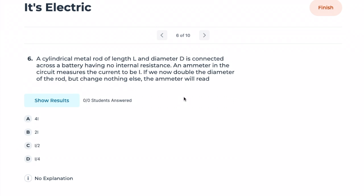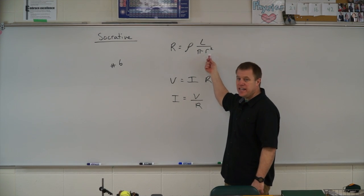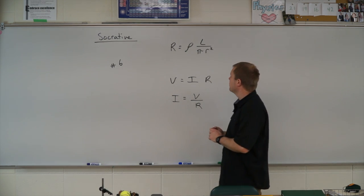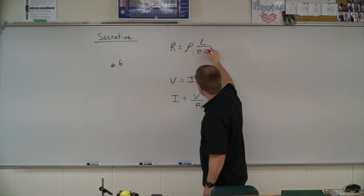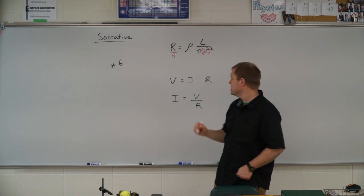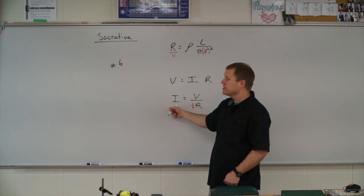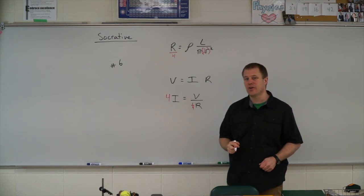Number six: a cylindrical metal rod of length L and diameter D is connected across a battery with no internal resistance, and an ammeter reads current I. If we double the diameter of the rod and change nothing else, what does the ammeter read? Doubling the diameter doubles the radius, and area scales as radius squared, so the area increases by a factor of four. That means resistance is one-fourth of R, and dividing voltage by one-fourth resistance is the same as multiplying by four, so the current will be 4I.